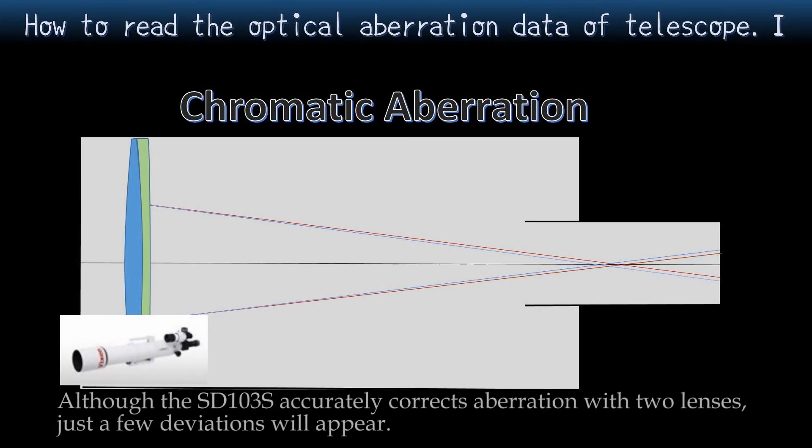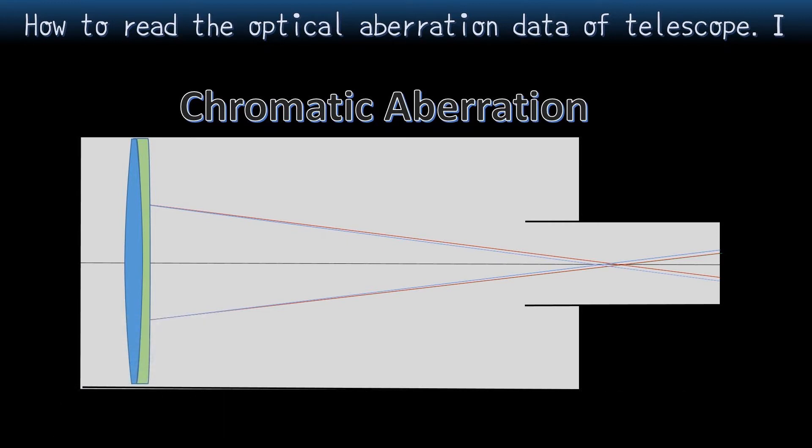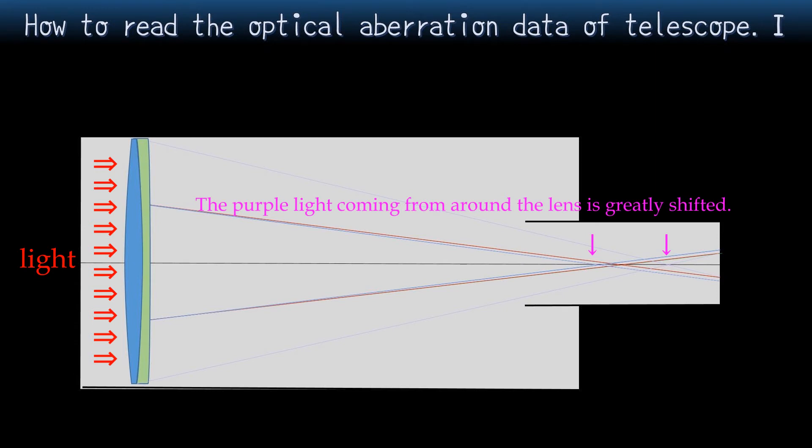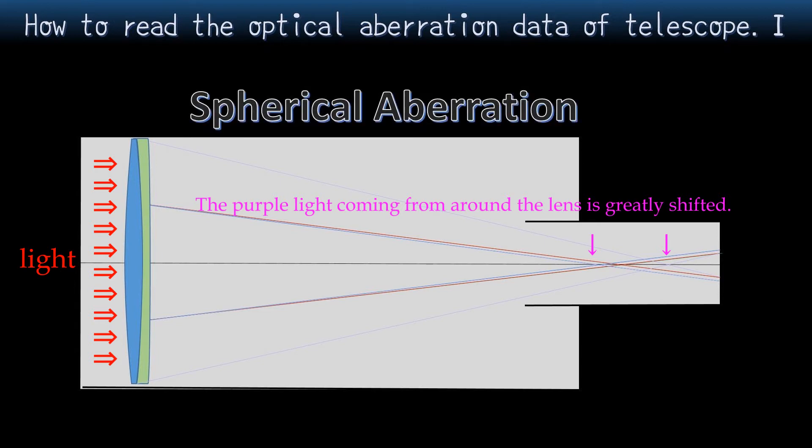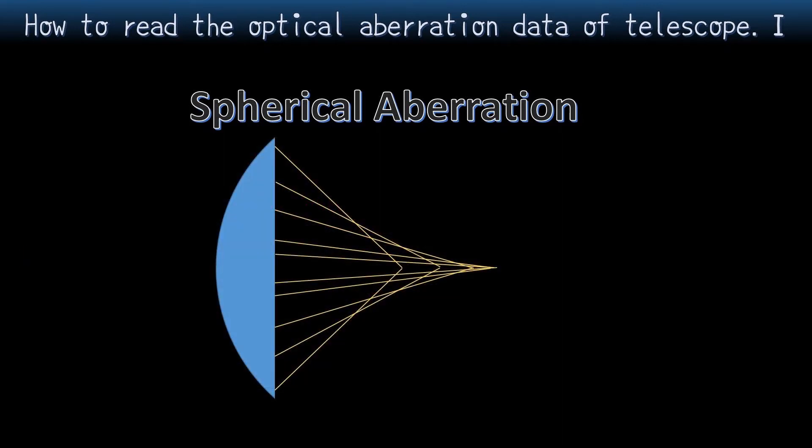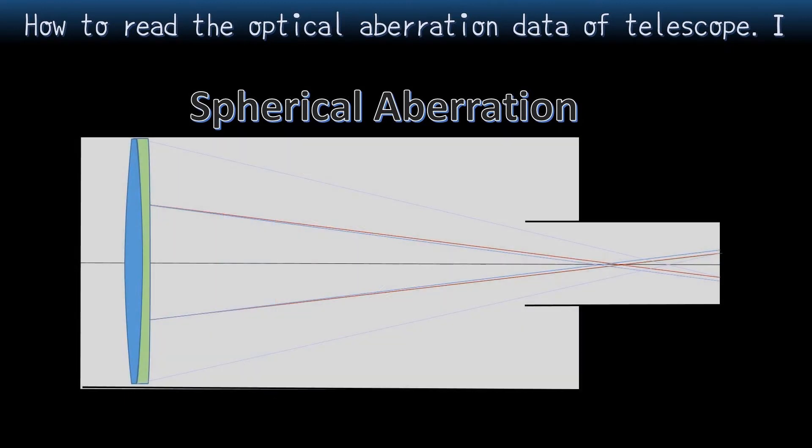Okay, let's get back on track. Although the SD-103S accurately corrects aberration with two lenses, just a few deviations will appear. Furthermore, this gap also depends on the position of the light entering the lens. And many reflecting telescopes using two lenses, the purple light coming from around the lens is greatly shifted. Thus, even if the same color divides from the focal point depending on the entering position, that is called spherical aberration. Spherical aberration occurs because the surface of the lens is spherical.